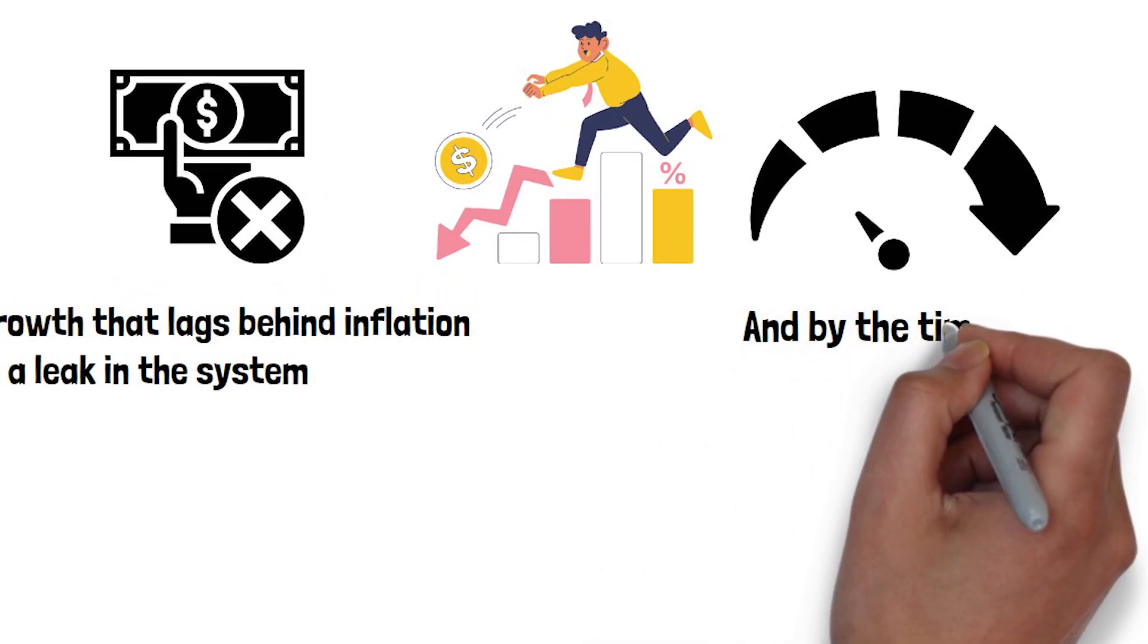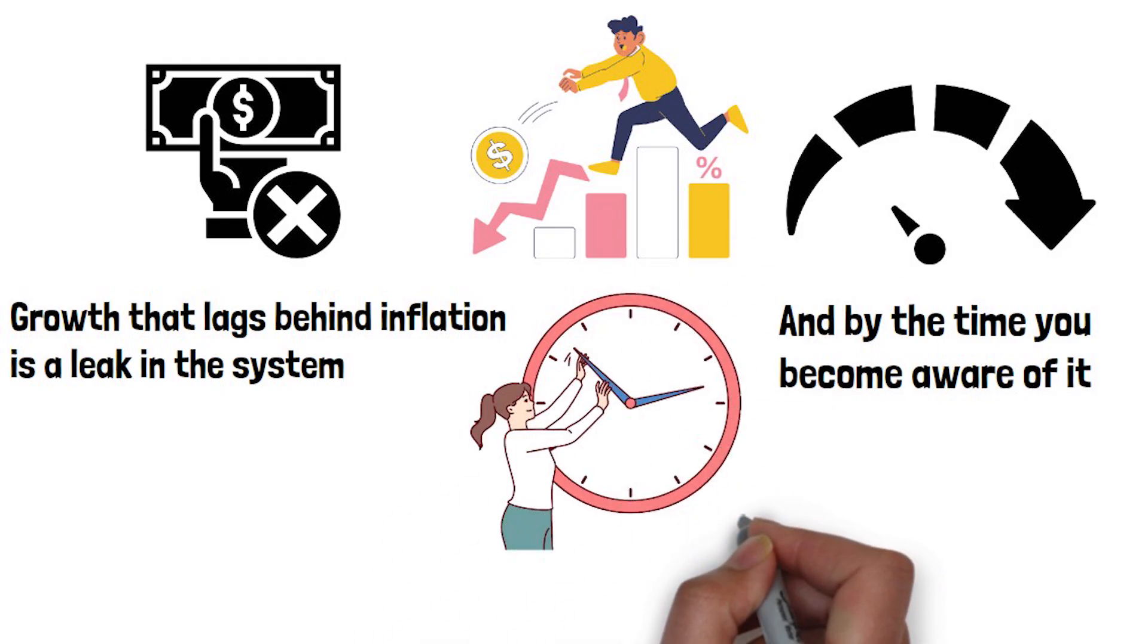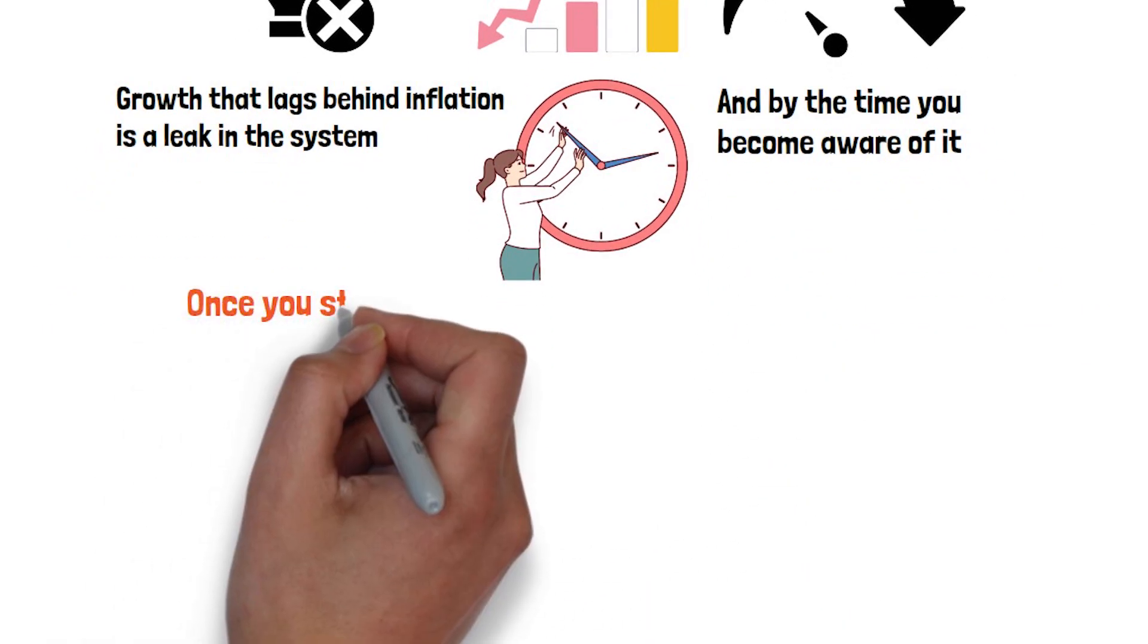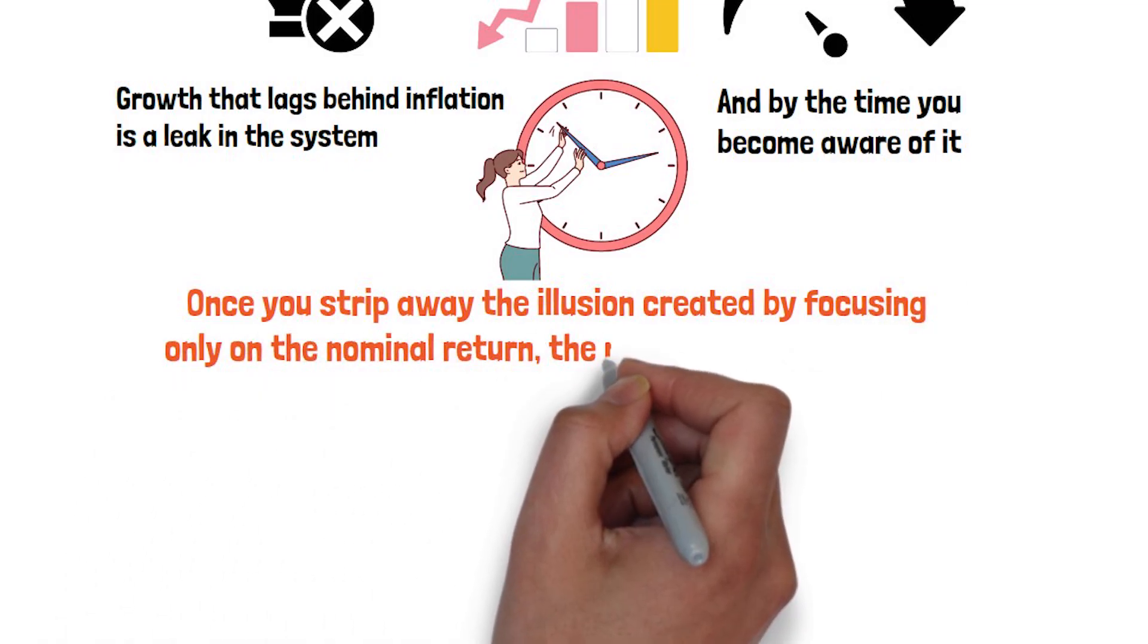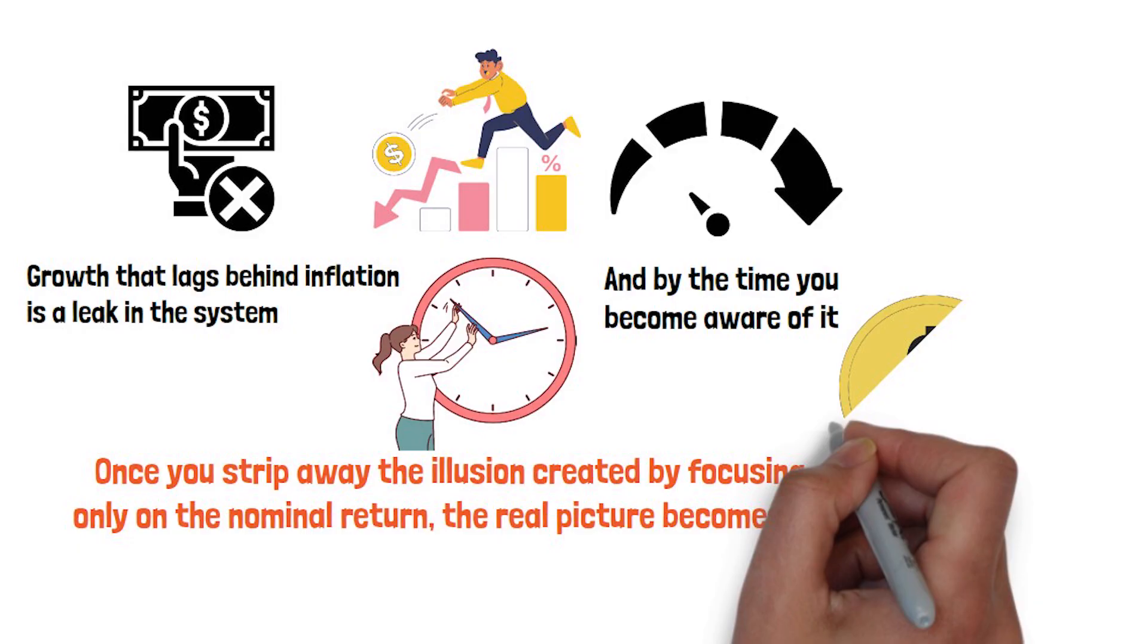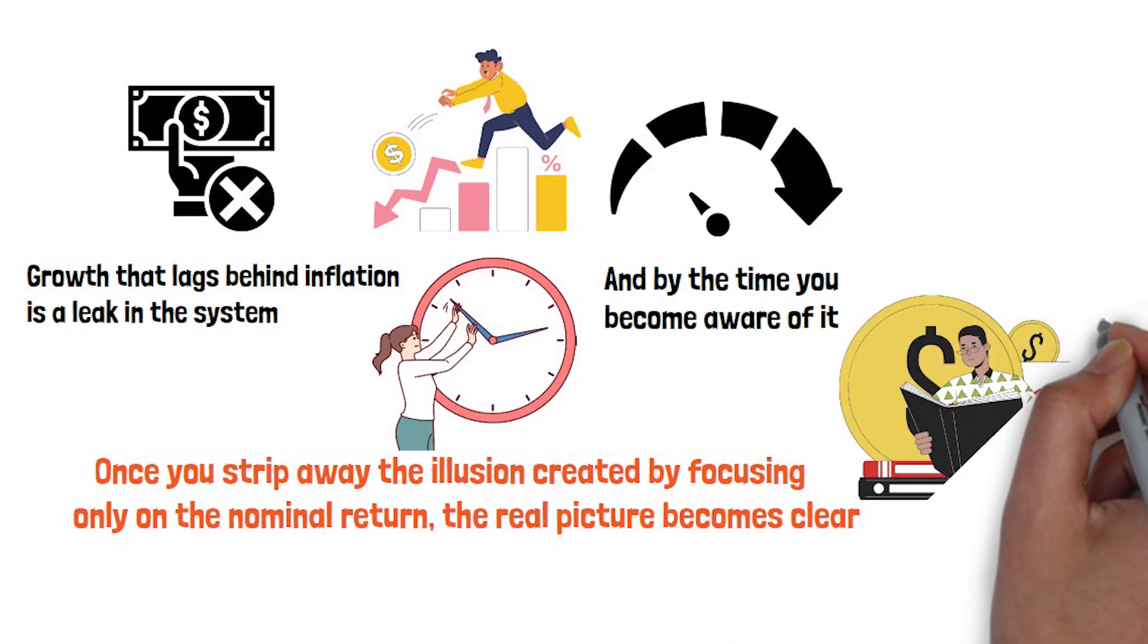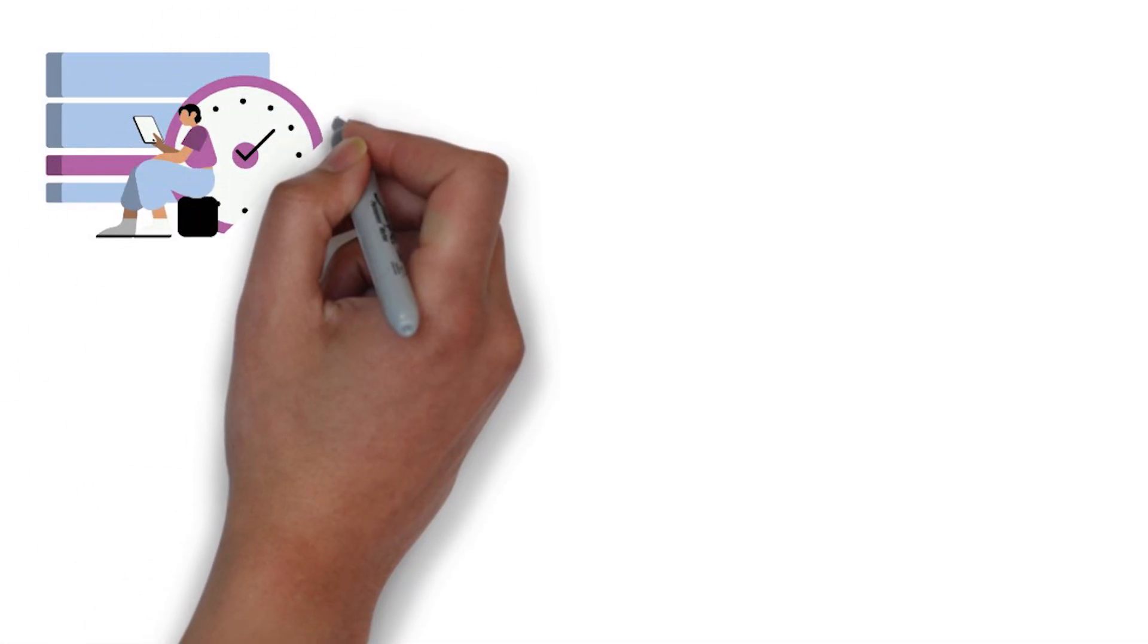And by the time you become aware of it, closing that gap takes far more time and effort than you expect. Once you strip away the illusion created by focusing only on the nominal return, the real picture becomes clear. To actually grow your wealth, your returns must at least match inflation and preferably beat it by a healthy margin. That's the only way time can start working in your favor instead of against you.